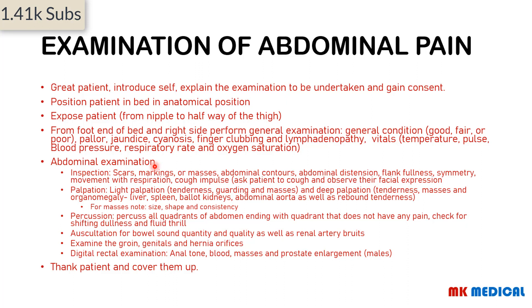On inspection, inspect the abdomen for scars, markings, and masses; comment on abdominal contours and distension; check for flank fullness, symmetry, and whether it moves with respiration. Ask the patient to cough and observe for cough impulse. On light palpation, check for tenderness, guarding, and masses. On deep palpation, check for tenderness, masses, and organomegaly — palpate the liver edge, spleen, ballot the kidneys, and palpate the abdominal aorta to rule out aneurysm.